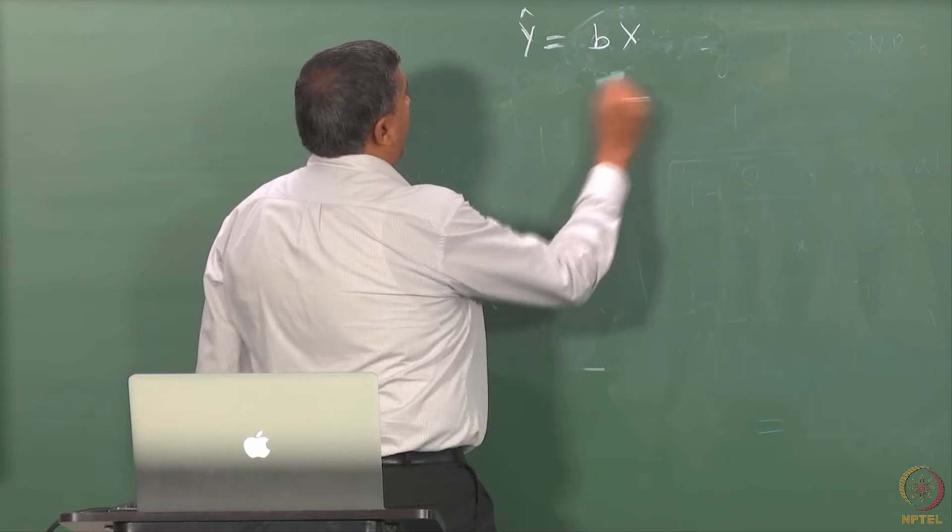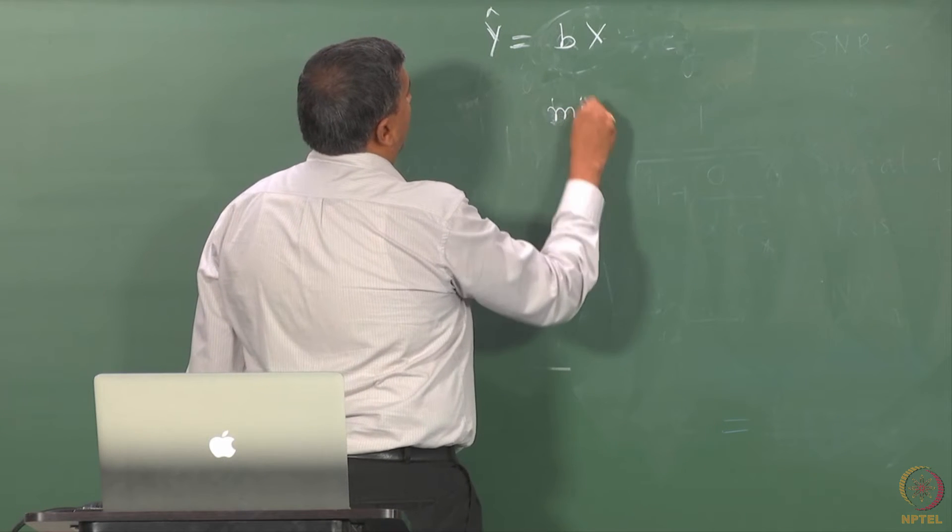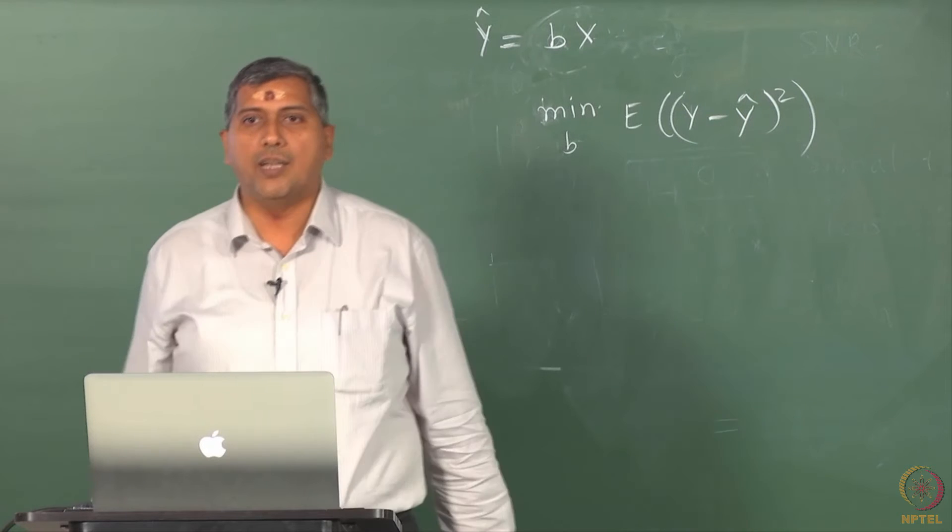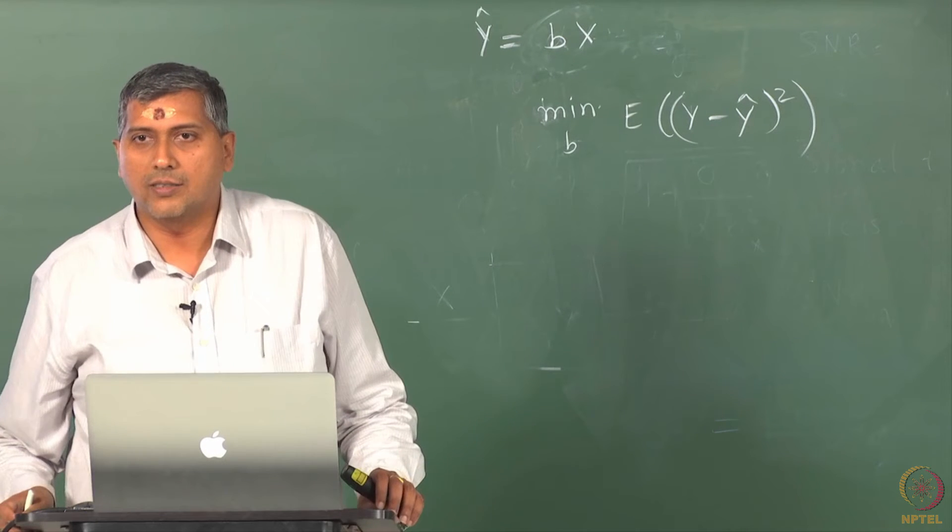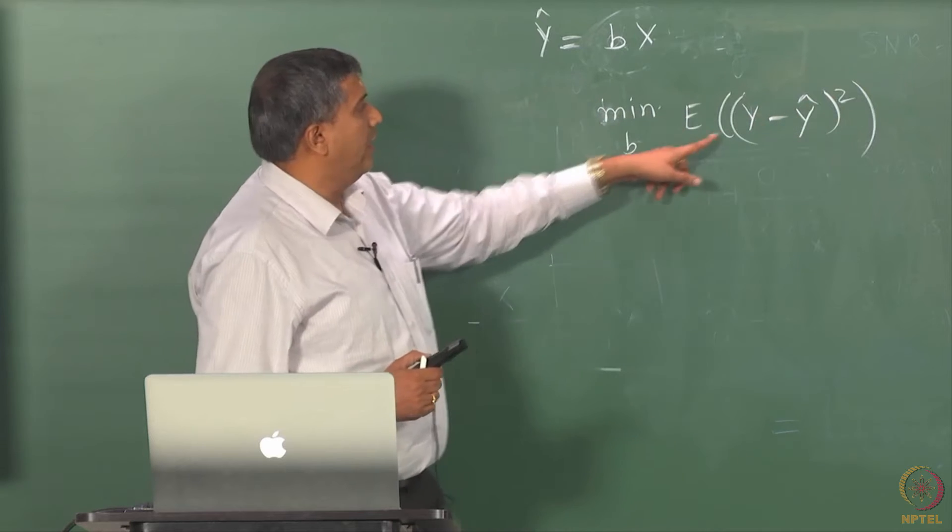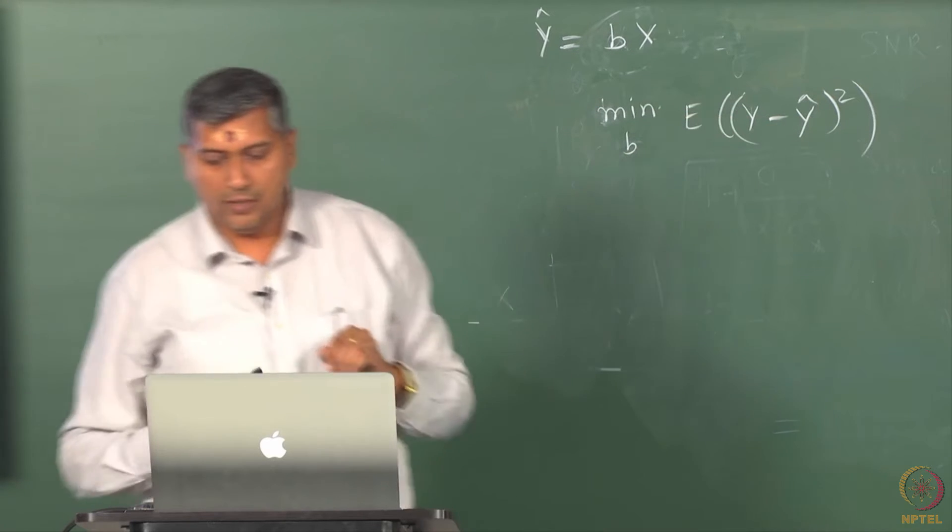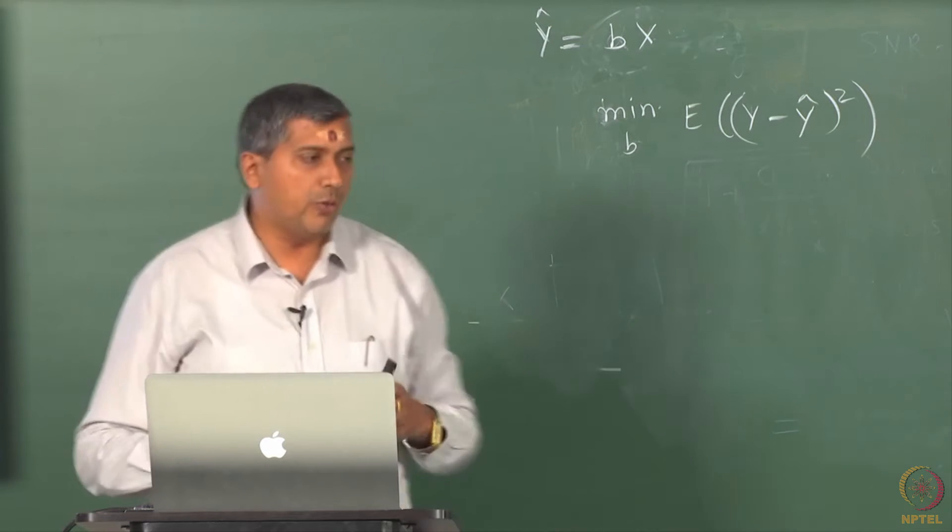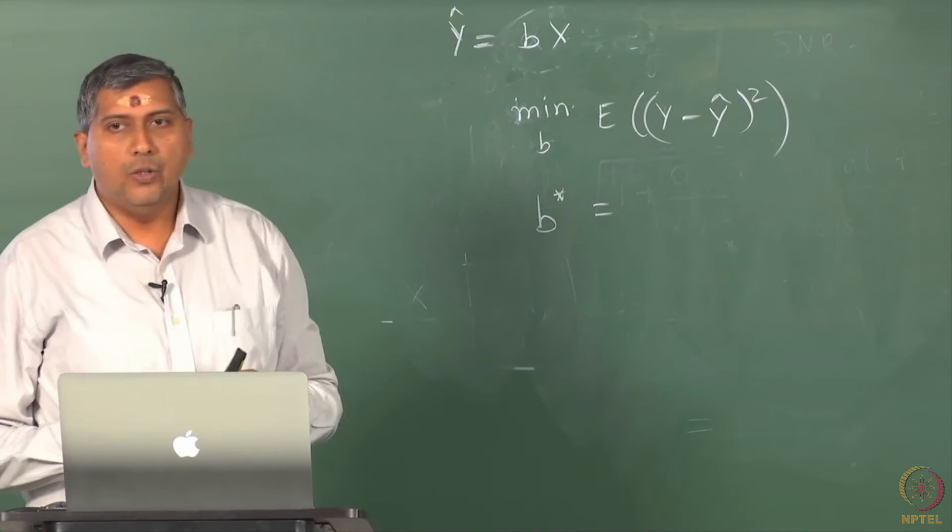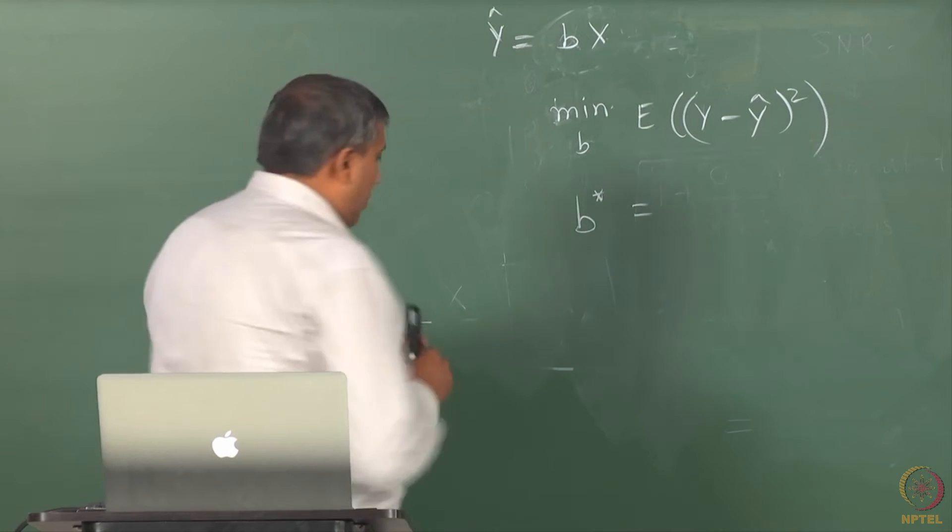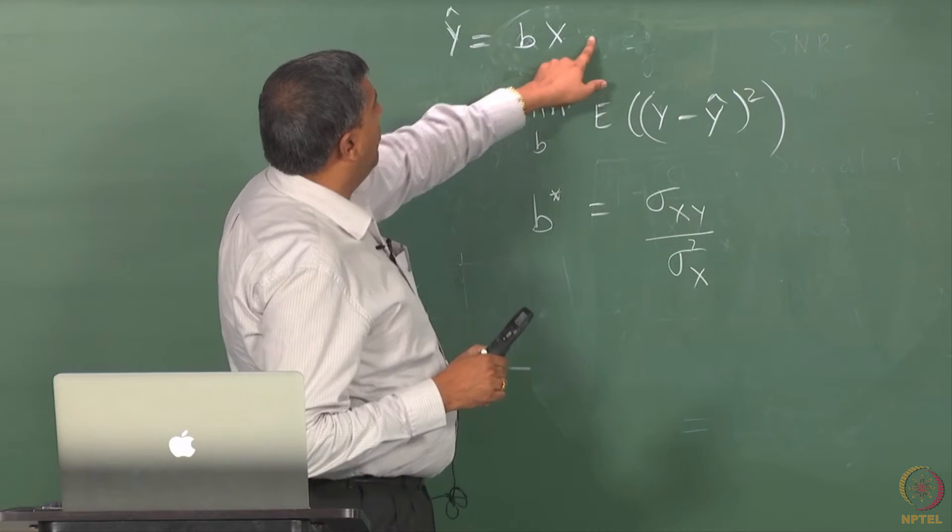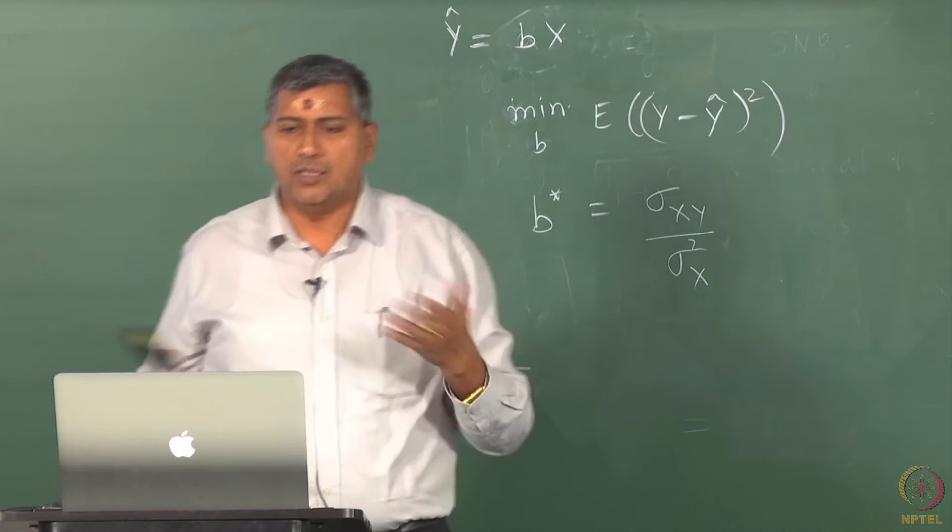When I do this, let's say I obtain an estimate of b by minimizing expectation of y minus y hat squared. We have done this before but in a slightly different context. Now when you try to estimate b by minimizing the mean square error rather, not sum square error, the resulting estimate is what you see on the slide, but I will also write this on the board. b star, you can actually do this - in fact it is a small homework you should do that. b star is sigma xy by sigma squared x. In fact I could also have bx plus a, but I did not just for convenience include that.